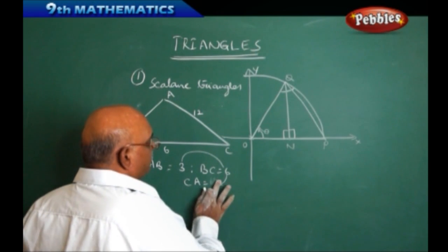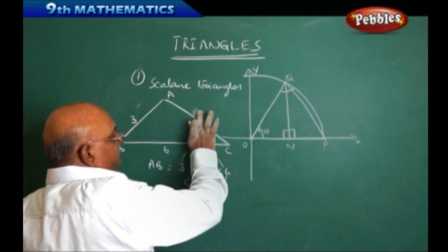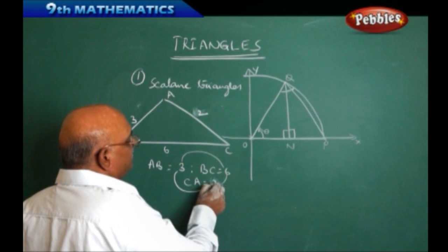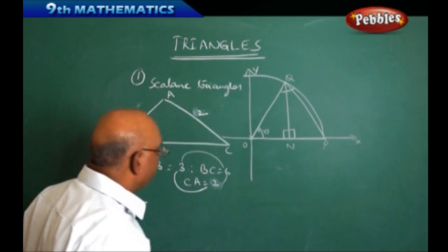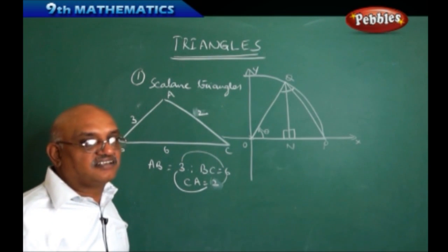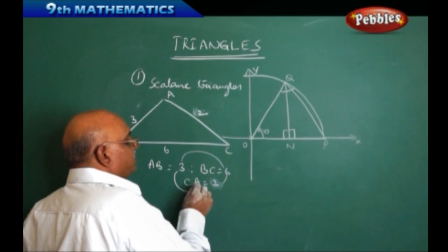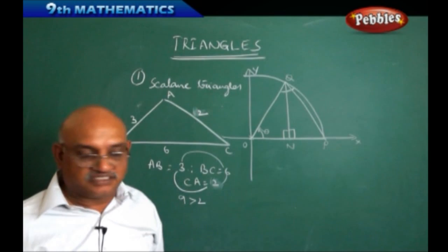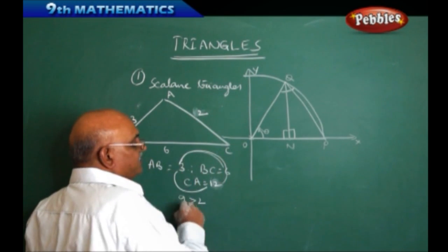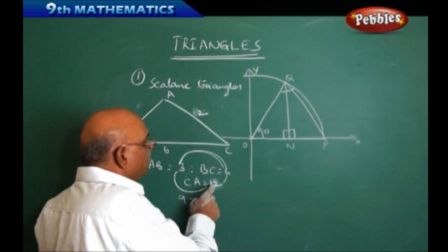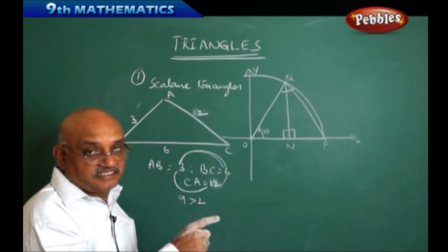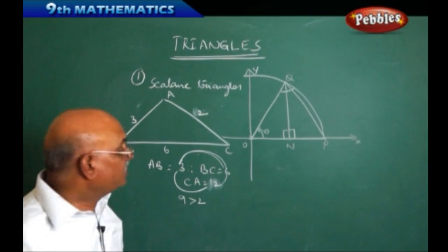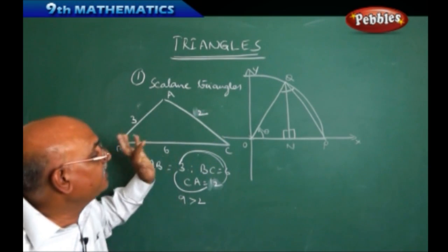Suppose instead of twelve I take two as the third side. Then three plus six is nine, and nine is greater than two. Also, six plus two is eight, which is greater than three. Therefore, sum of two sides is greater than the third side — the condition is satisfied. So we can say it is going to form a triangle. This triangle with different sides is called a scalene triangle.